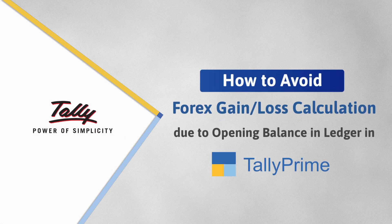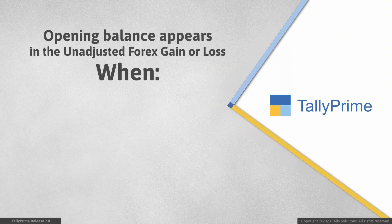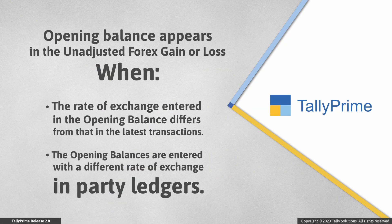Welcome to Tally Help Videos. In this video, you will understand how to avoid forex gain or loss calculation for the opening balance bills entered in party ledgers. When you provide opening balance for a party, it may appear in the unadjusted forex gain or loss. This happens when the rate of exchange entered in opening balance is not equal to the existing rate of exchange entered in the latest transactions. It can also happen when the opening balance bills are entered with a different rate of exchange.